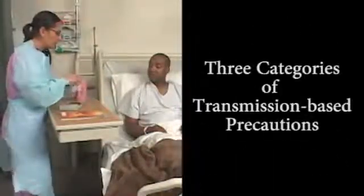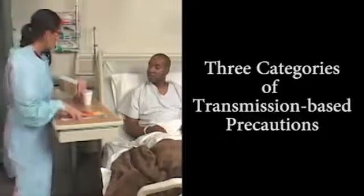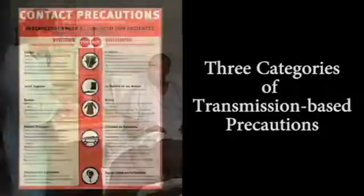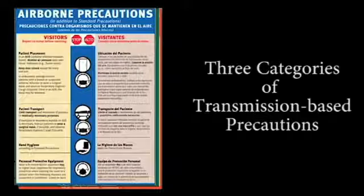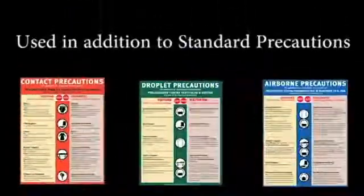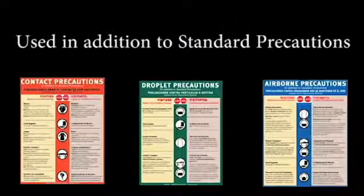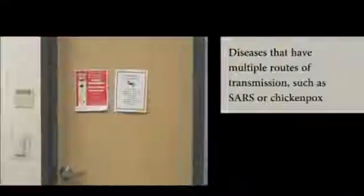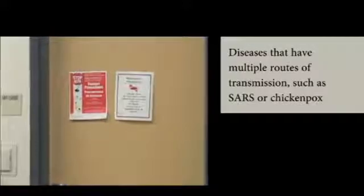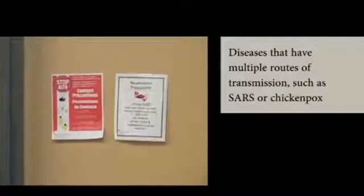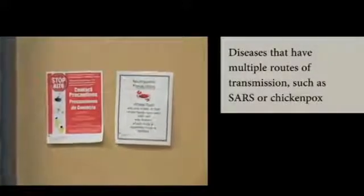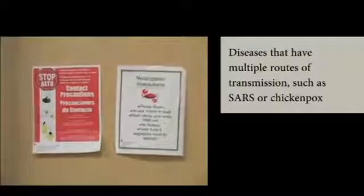There are three categories of transmission-based precautions: Contact, Droplet, and Airborne. They are used in addition to standard precautions when specific infectious organisms are known or suspected. For diseases that have multiple routes of transmission, such as SARS or chickenpox, more than one transmission-based precaution category may be used.